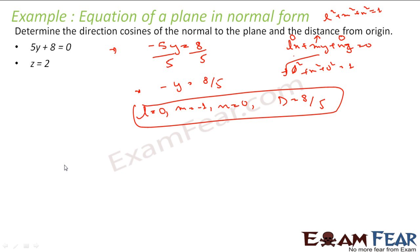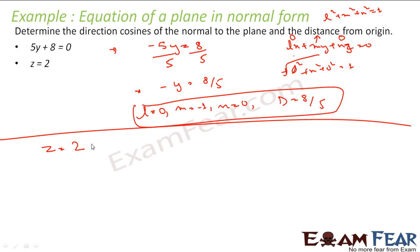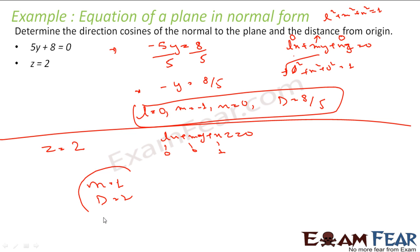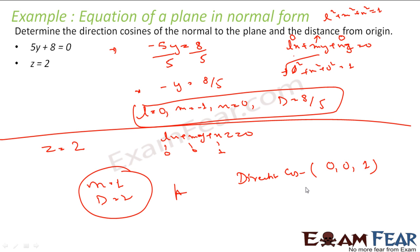Second, take z is equal to 2. This is already in the required form Lx plus My plus Nz equals d. L is equal to 0, M is equal to 0, N is equal to 1, and that is correct. So we will not convert. We can say N is equal to 1 and D is equal to 2 in this case. So direction cosines are 0, 0, 1 and the distance is 2.